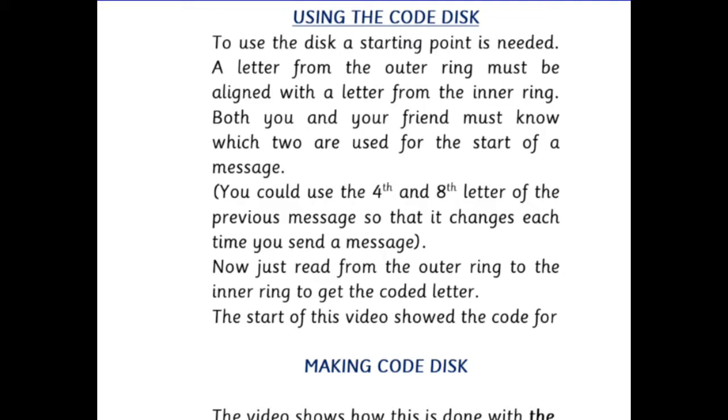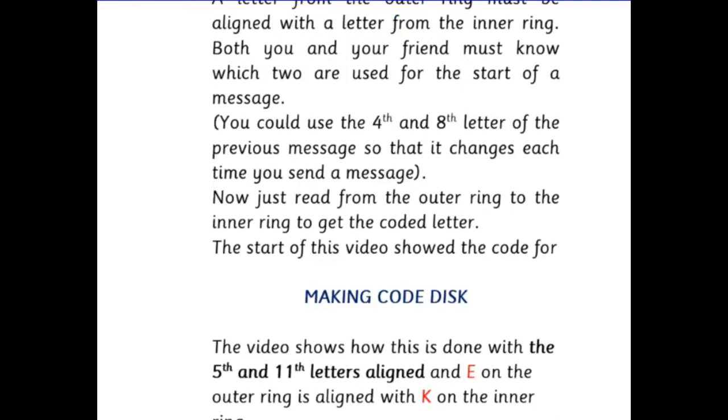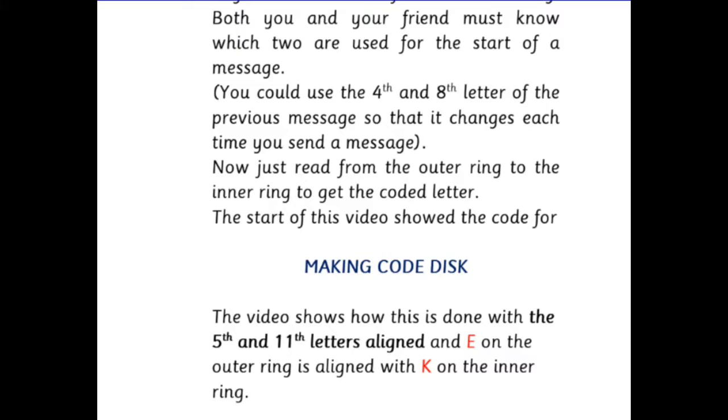You could use for example the fourth and eighth letters of the previous message so that it changes each time you send a message. Now just read from the outer ring to the inner ring to get the coded letter. The start of this video showed the code for making code disk. The video shows how this is done with the fifth and eleventh letters aligned and E on the outer ring is aligned with K on the inner ring.